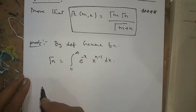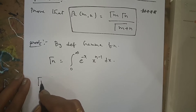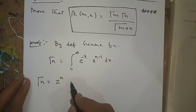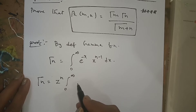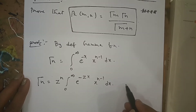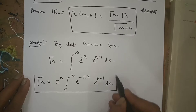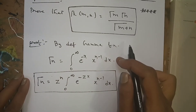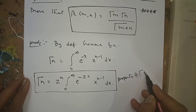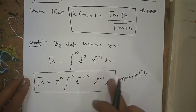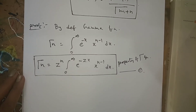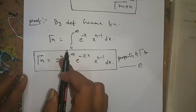There is one more property of the Gamma function. The property states: Γ(n) = z^n · ∫₀^∞ e^(−zx) · x^(n−1) dx. This is a property derived from the definition of the Gamma function — remember it well. I am taking this as Equation 1.